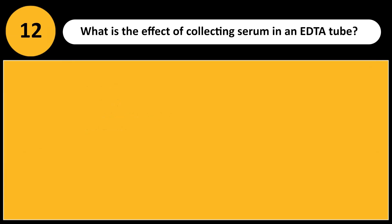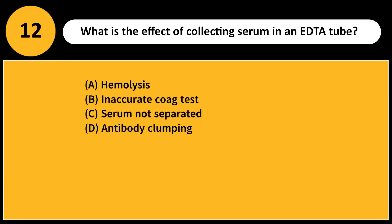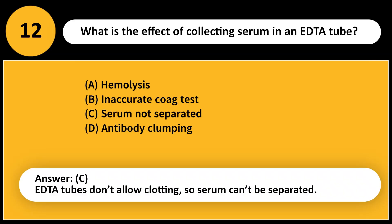What is the effect of collecting serum in an EDTA tube? A. Hemolysis. B. Inaccurate coagulation test. C. Serum not separated. D. Antibody clumping. Answer: C. EDTA tubes don't allow clotting, so serum can't be separated.